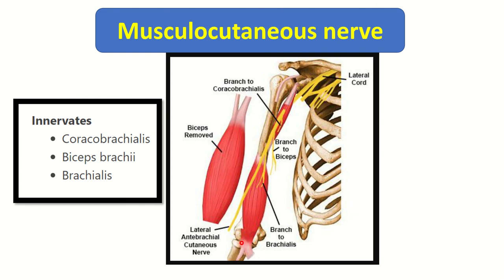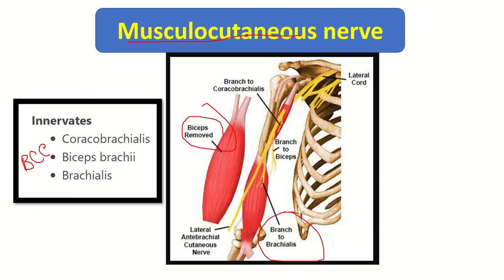The musculocutaneous nerve supplies these two important muscles: biceps brachii and brachialis. Here is a helpful mnemonic — BBC: B for brachialis, B for biceps brachii, and C for coracobrachialis. The musculocutaneous nerve is a branch from the brachial plexus and supplies these three muscles, two of which are responsible for elbow flexion, and the third being the coracobrachialis.